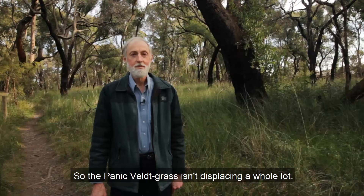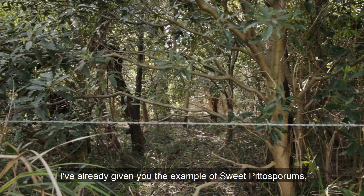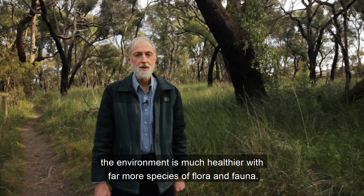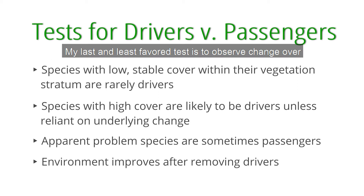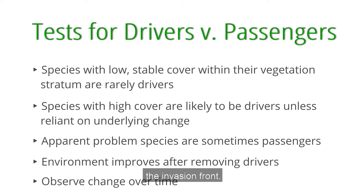My next test for a driver species is to see whether when you remove a species, the environment improves significantly as a result. I've already given you the example of Sweet Pittosporum, where on one side of the fence where they've been allowed to grow, there is very little native flora and fauna, and on the other side where the Sweet Pittosporums were removed, the environment is much healthier with far more species. Other scientists have shown scientifically that Sweet Pittosporum can behave as a driver of ecological change in a range of vegetation communities in Victoria. My last and less favoured test is to observe change over time in the absence of any control measures — for example, by watching a species spread across the area of interest, with ecological deterioration occurring behind, but not in front of, what you might call the invasion front.